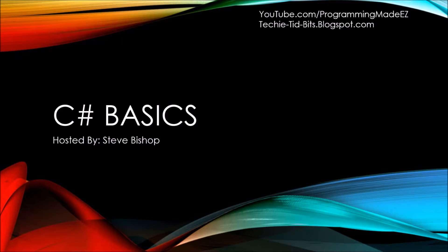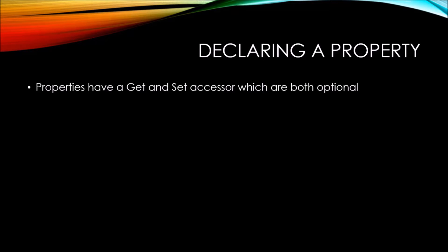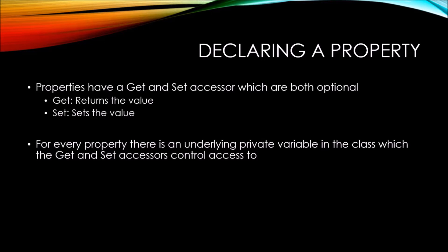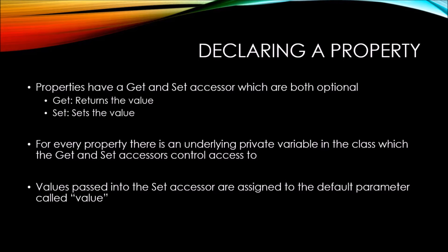In this video on C# basics, let's take a look at declaring a property. Properties have a get and set accessor, which are both optional. The get accessor returns the value, and the set accessor sets the value. Behind every property, there is an underlying private variable inside the class which the get and set accessors control access to. Values assigned to the property and therefore passed into the set accessor are assigned to the default parameter called value.